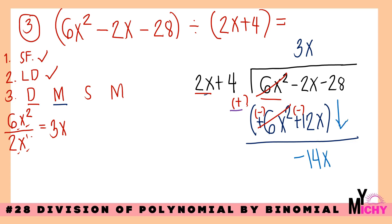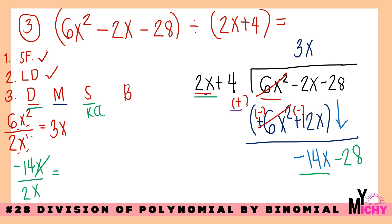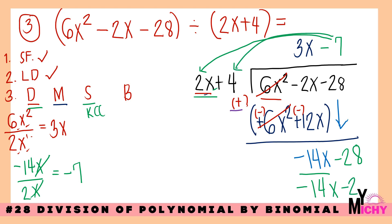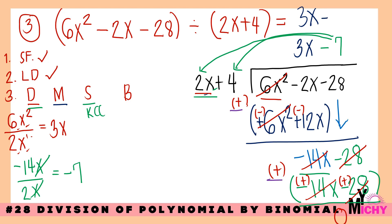Repeat the cycle. Divide: negative 14x divided by 2x — the x's cancel, and negative 14 divided by 2 is negative 7. Write negative 7 on top. Multiply: negative 7 times 2 is negative 14, with x brought down; negative 7 times 4 is negative 28. Write negative 14x minus 28 below. Subtract with KCC, signs flip. Negative 14x terms cancel to 0, and negative 28 plus positive 28 equals 0. The final answer is 3x minus 7.